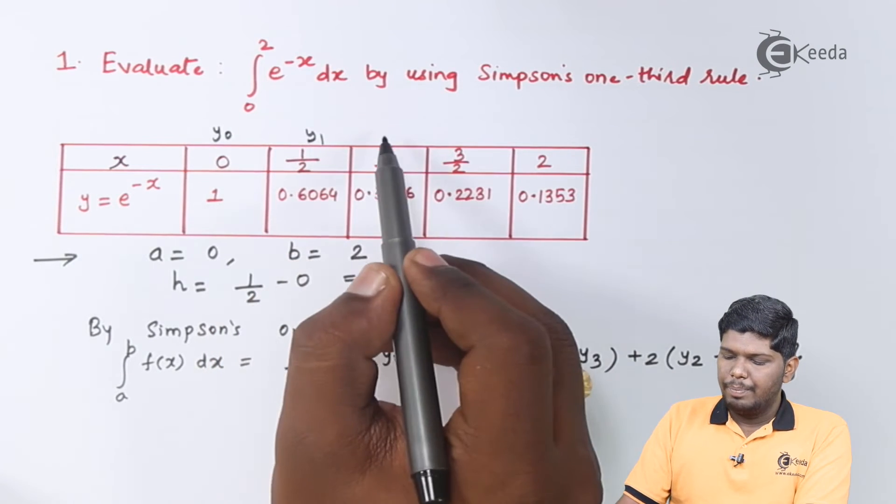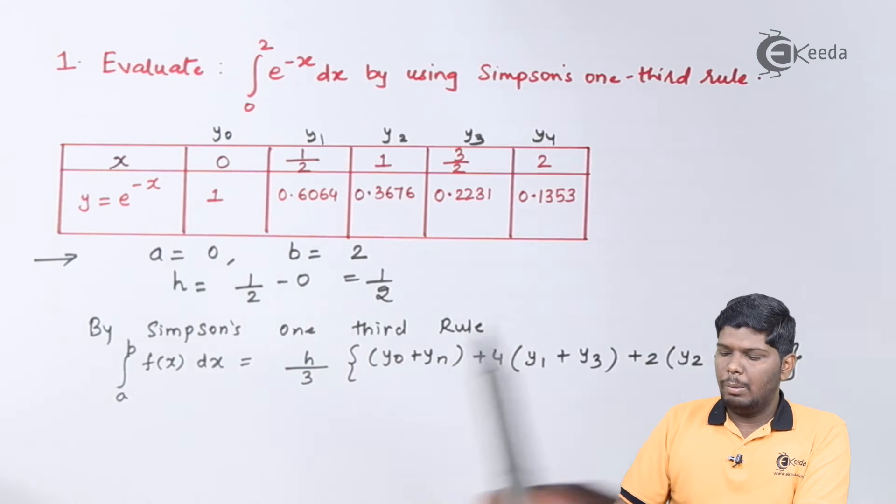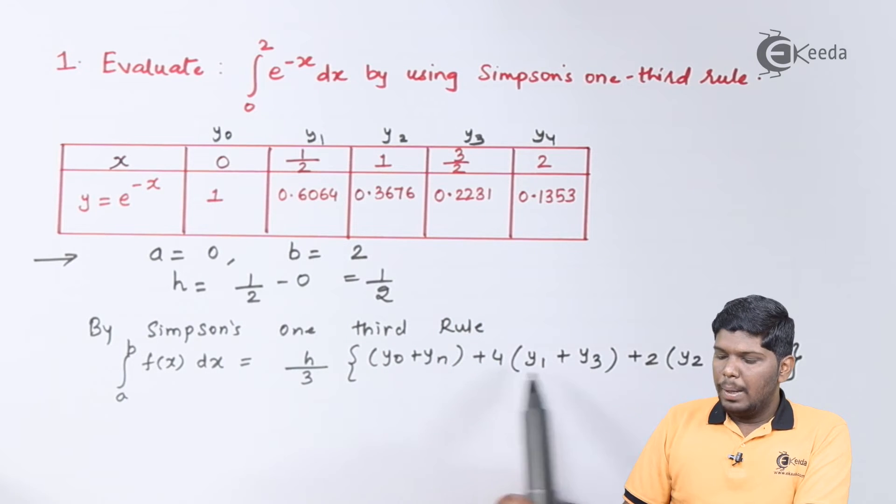So the last term yₙ will be nothing but y₄ plus 4 times, here we write the even coordinates.